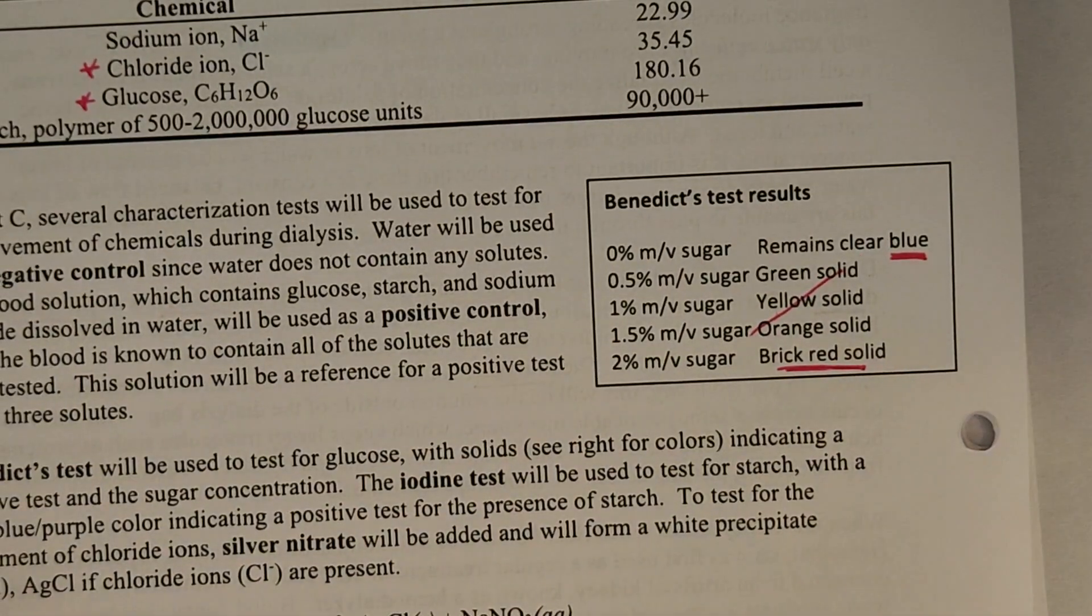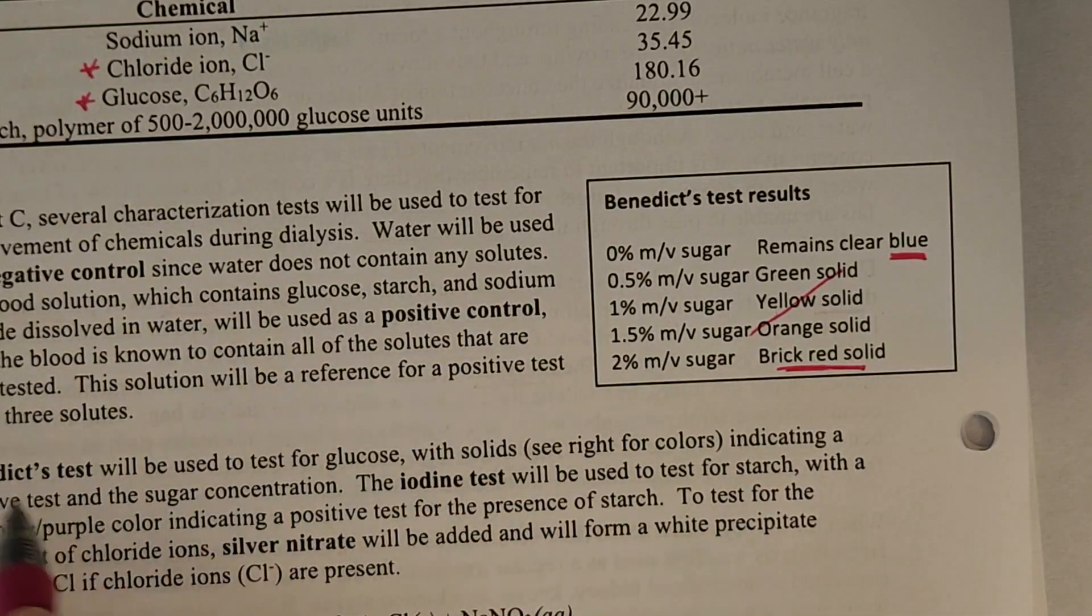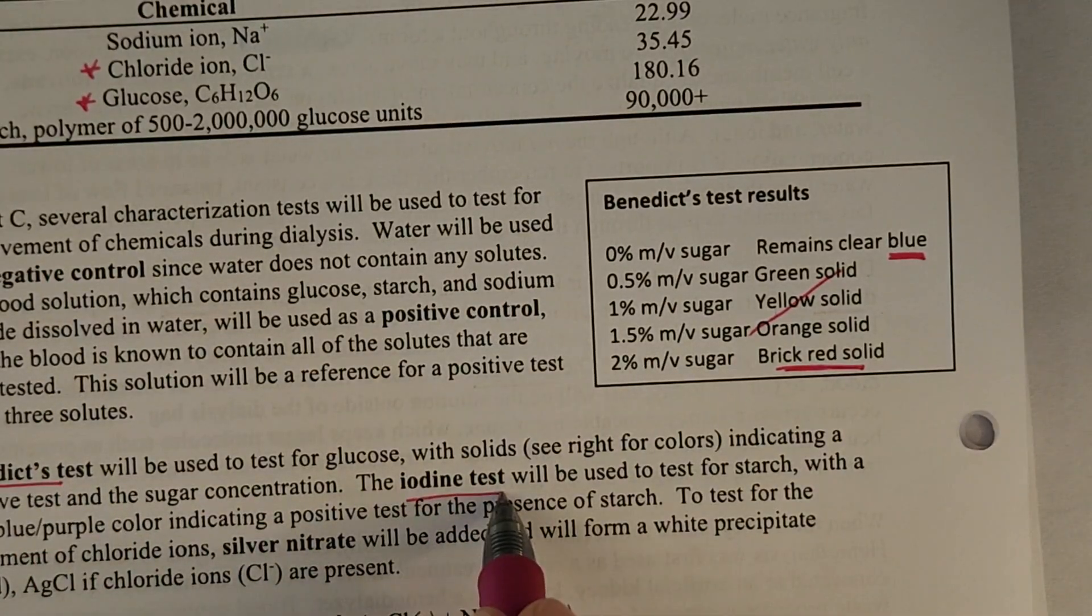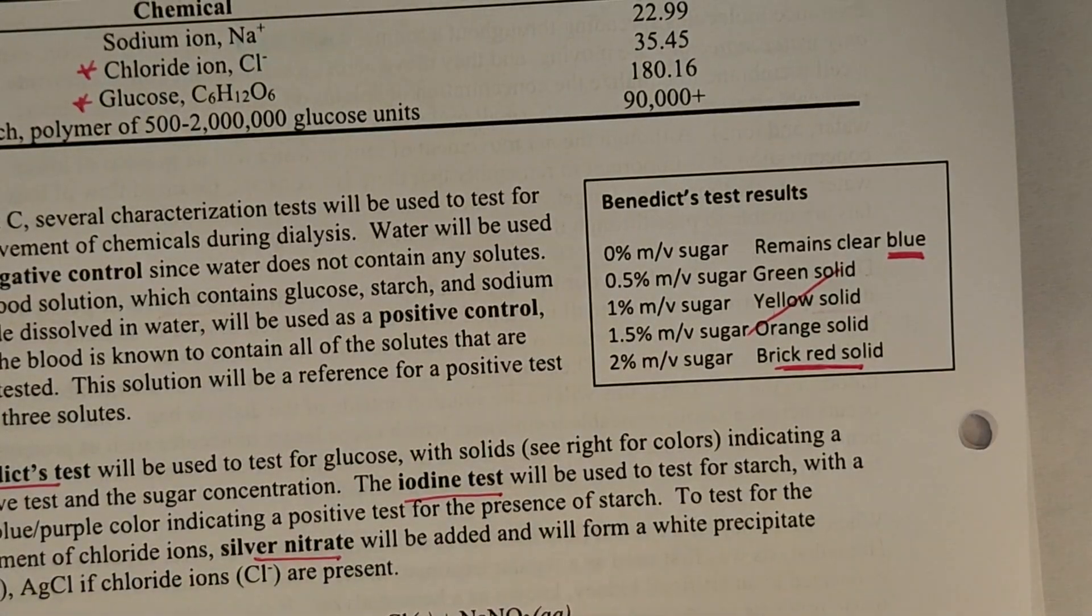And then for the starch, we'll be doing a test called an iodine test. So Benedict's test for sugar, iodine for starch, and silver nitrate for the chloride. So those are the solutes and the tests that we're going to be looking at today.